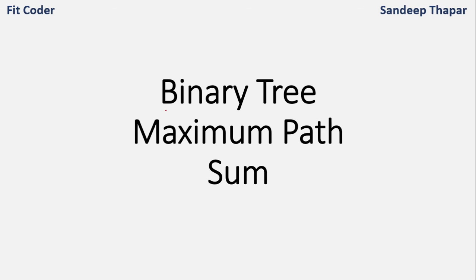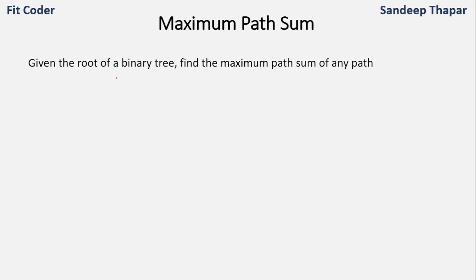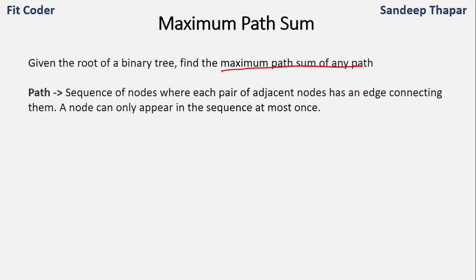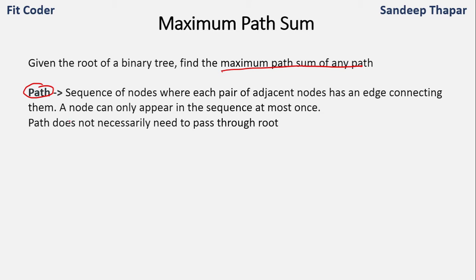In this video we will discuss how we can find the maximum path sum in a binary tree. Given the root of a binary tree, we have to find the maximum path sum of any path. A path is a sequence of nodes where each pair of adjacent nodes has an edge connecting them. A node should appear only once in the path, and it is not necessary that the path passes through the root.